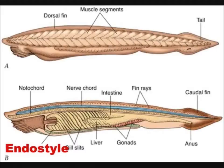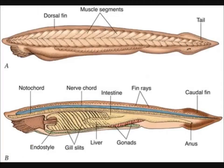Musculatura corpului este segmentată. Orificiul bucal se diferențiază în timpul dezvoltării embrionare după diferențierea orificiului anal, fenomen numit deuterostomie. Reproducerea este sexuată și, în general, sexele sunt separate.